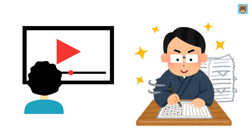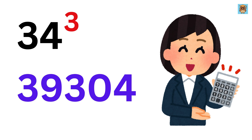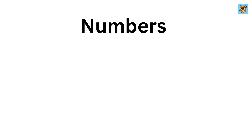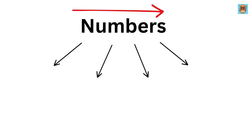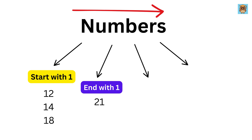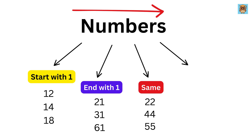After watching this video and with a bit of practice, you will be able to calculate the cube of any two-digit number within seconds. As a first step, we will divide numbers into four categories: numbers that start with one (like 12, 14, 18), numbers that end with one (like 21, 31, 61), same-digit numbers (like 22, 44, 55), and different numbers (like 23, 35, 72).